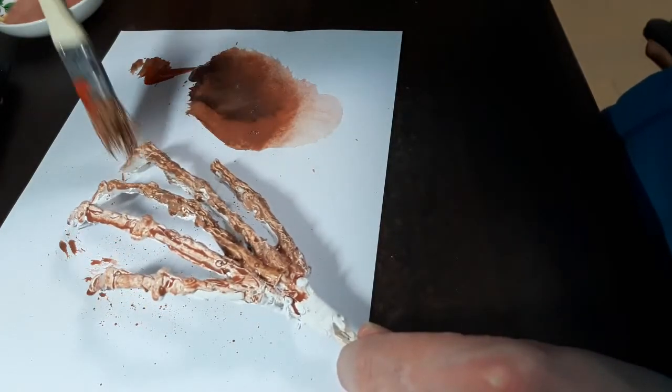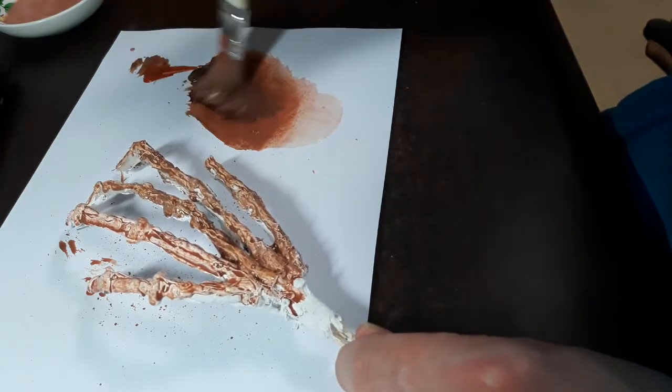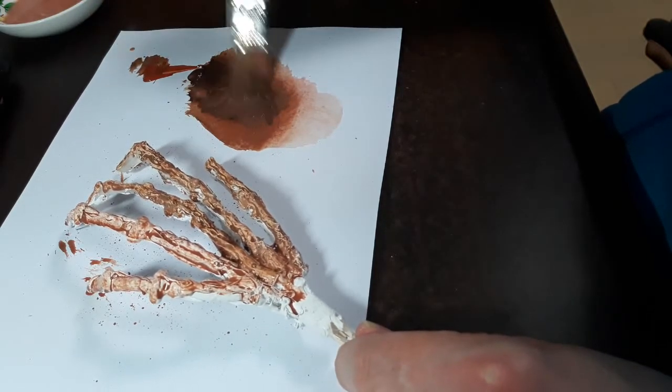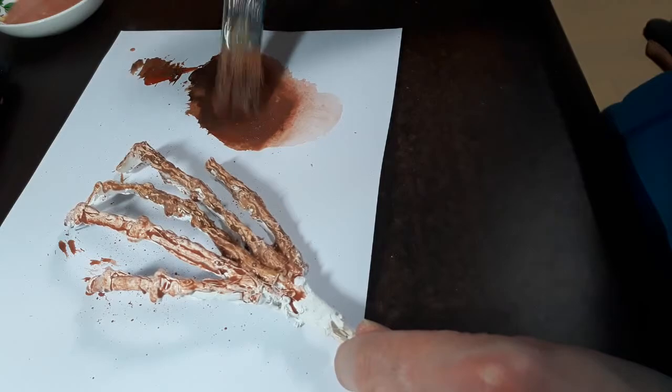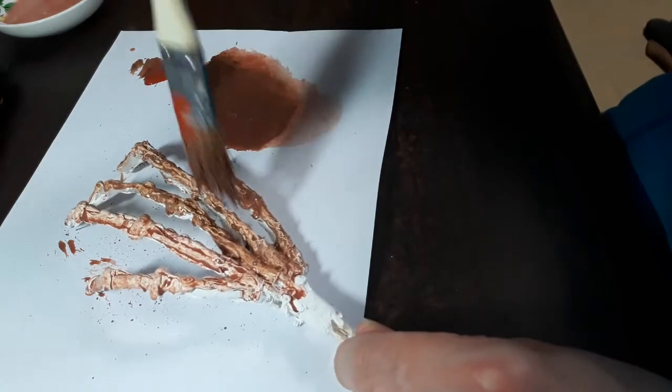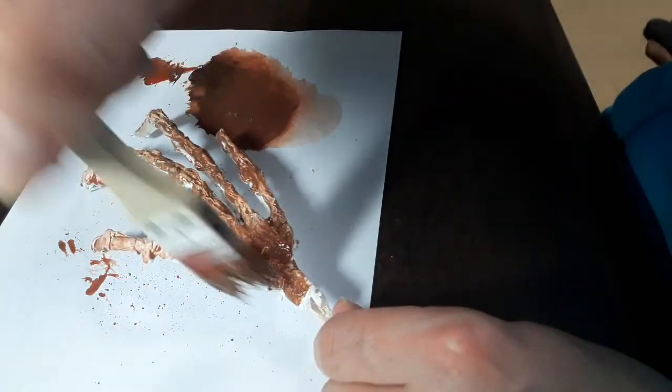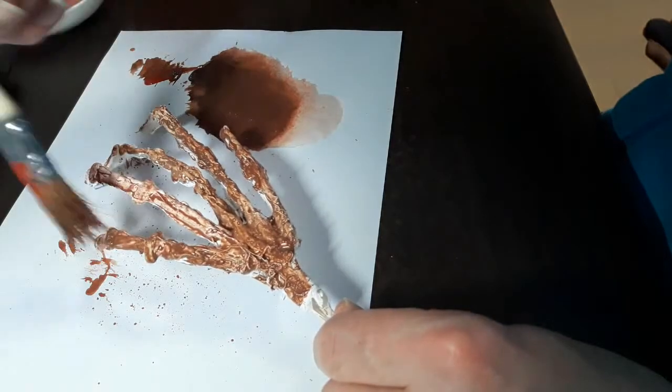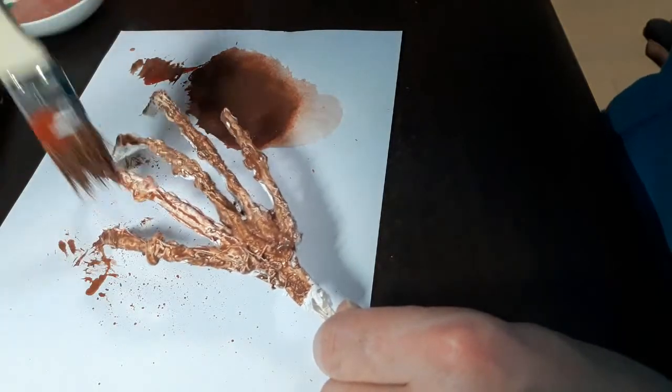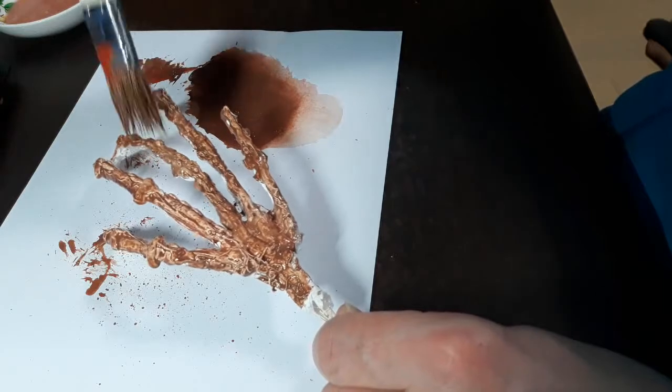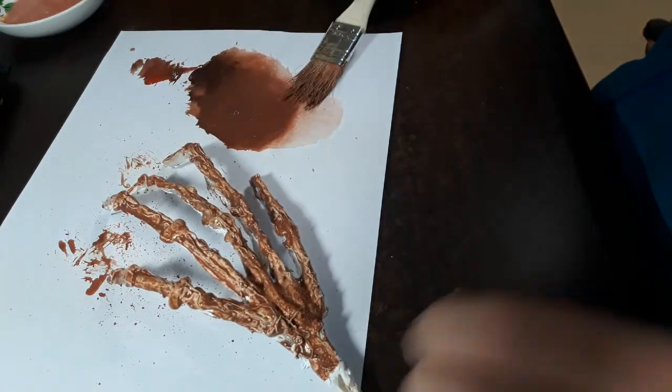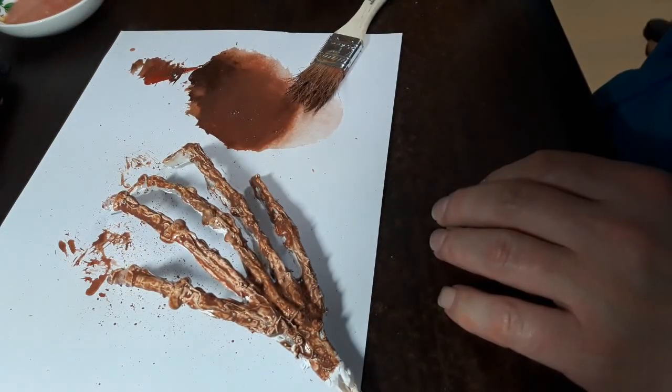It's kind of a messy job. Everything's kind of messy in prop making, so not to worry. Just apply it. This is coat number one. I'm going to show you both of the hands together with both of the coats two or three times.